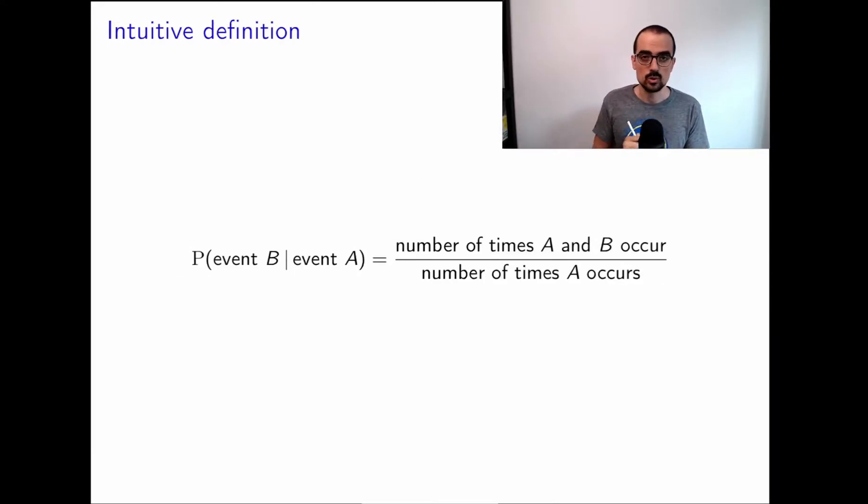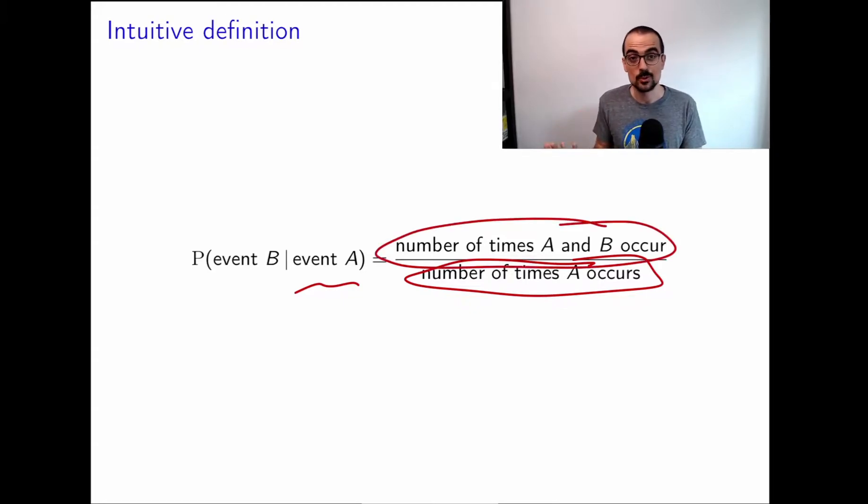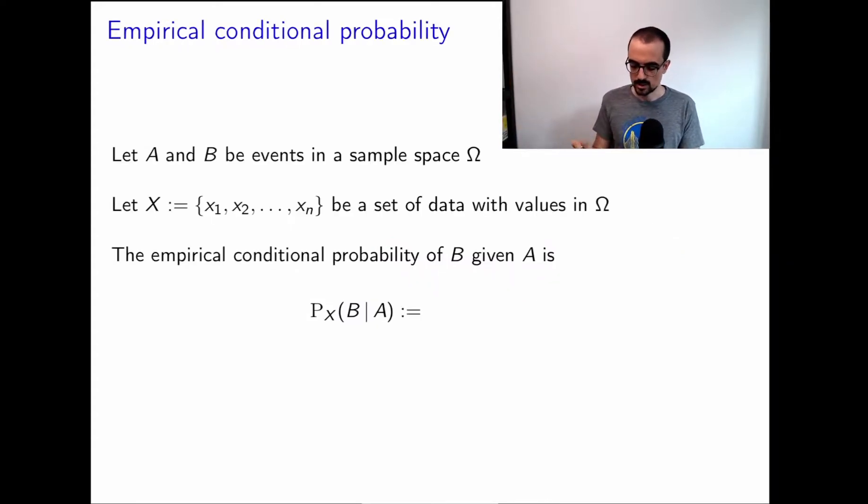So now let's go on to conditional probabilities. Our intuitive definition for conditional probability was that if we're interested in the probability of an event B conditioned on an event A happening, and we have this experiment that is repeated over and over, what we do is we just preserve the times that A occurs, and out of those, we see how many times did B occur.